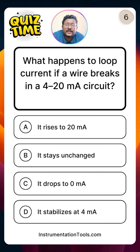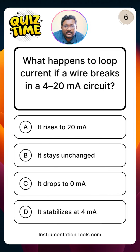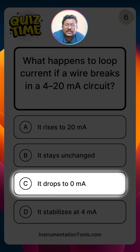What happens to loop current if a wire breaks in a 4 to 20 milliampere circuit? We have a sensor or transmitter connected to a PLC using a 4 to 20 milliampere loop. The 4 milliampere represents minimum process value and 20 milliampere represents maximum process value. If the wire is broken, no current flows to the PLC — it drops to 0 milliampere. Option C.